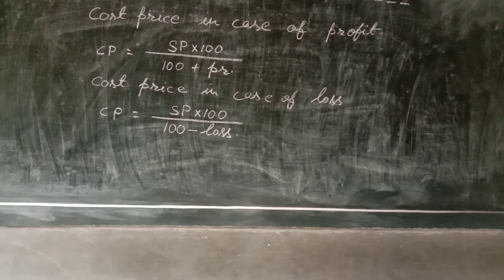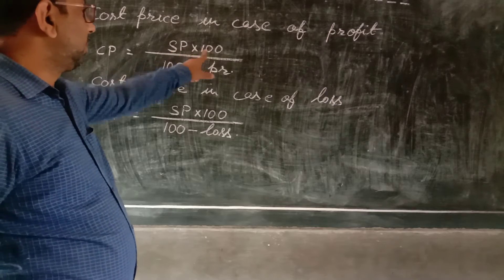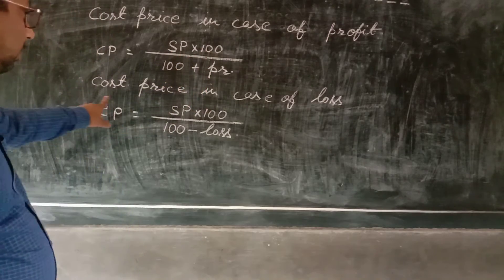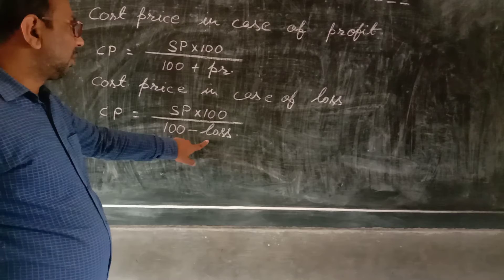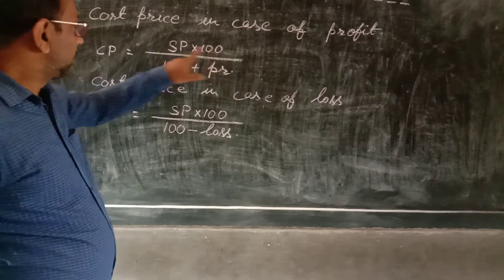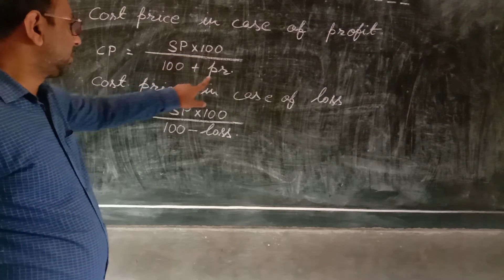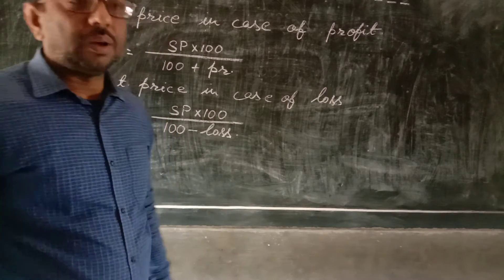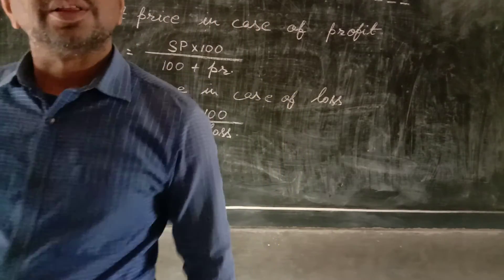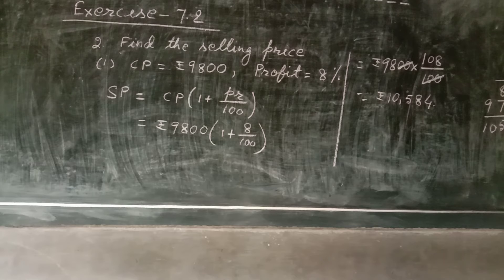We have two more formulae — cost price in case of profit and cost price in case of loss. Cost price in case of profit: CP equals SP into 100 divided by (100 plus profit). Cost price in case of loss: CP equals SP into 100 divided by (100 minus loss). Now let us start Exercise 7.2.